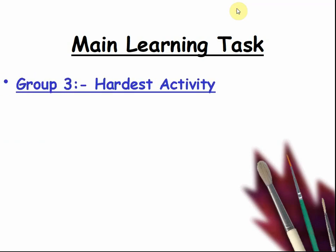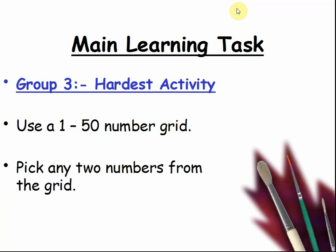The challenging level. Are you ready? The hardest level. Use a 1 to 50 number grid. Pick any 2 numbers from the grid. Write them down.